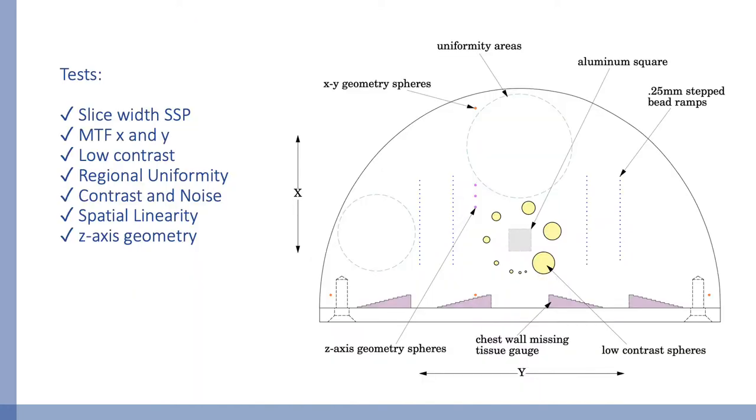The Phantom is specifically designed to address the needs of measuring tomosynthesis imaging. At first look, tomosynthesis imaging looks like CT, but because of the partial reconstruction arc, the slices have a lot more variability than what you would normally see in CT. And for that reason, additional tests and observations are required.